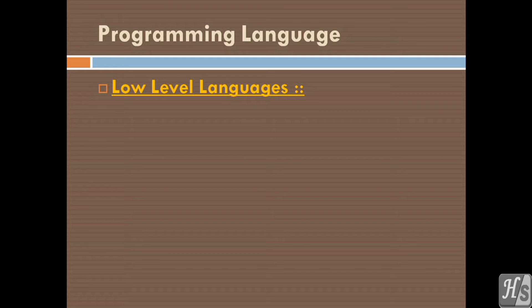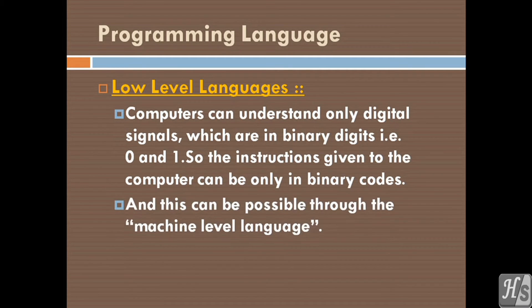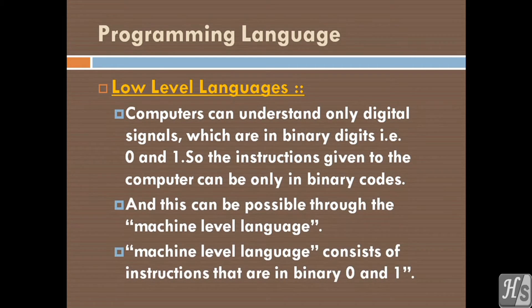Low-level languages. Computers can understand only digital signals, which are in binary digits, such as 0 and 1. So the instructions given to the computer can be only in binary code. Computer can understand only machine-level language, such as 0 and 1. The machine-level language consists of instructions that are in binary.